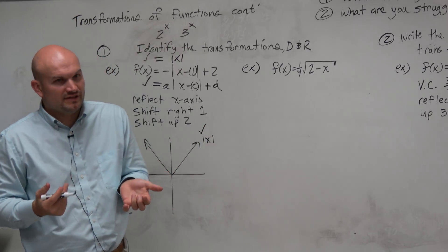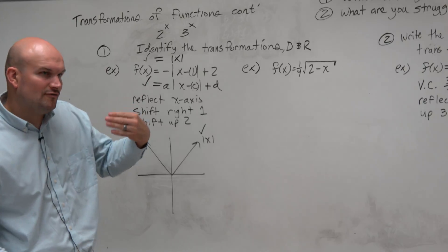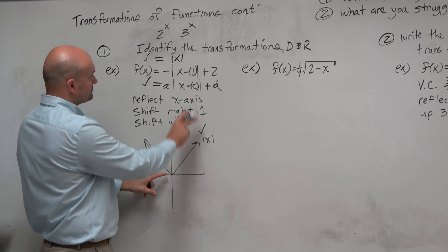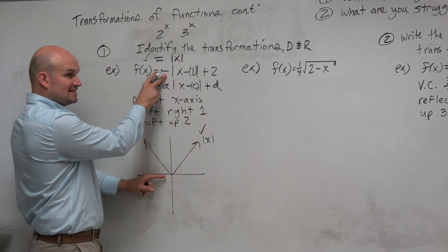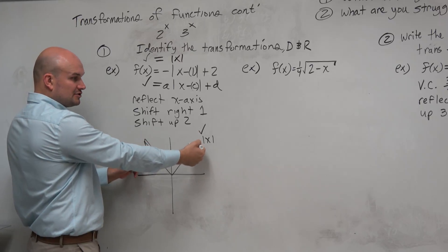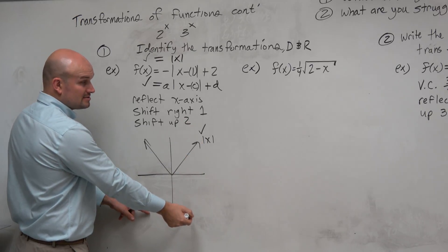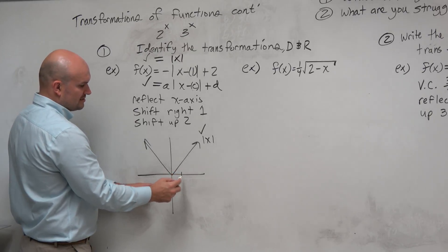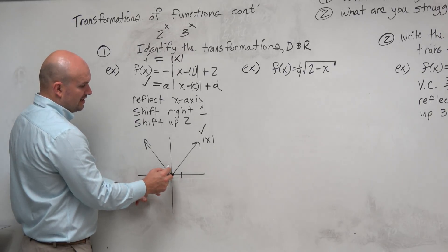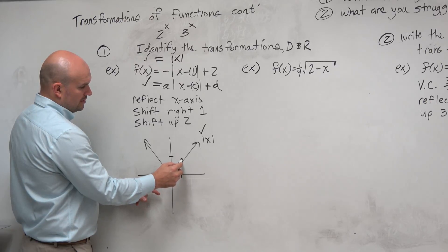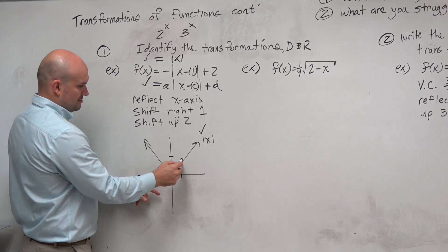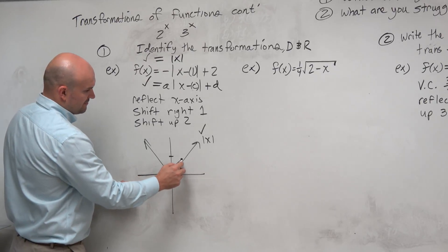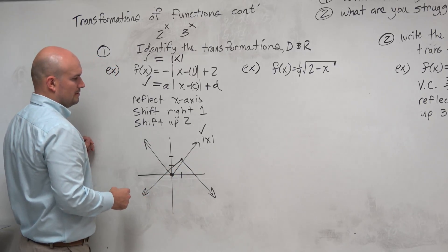Now, I didn't ask you to graph the graph, but I think it's helpful to understand the transformations. This graph is being reflected about the x-axis, so that means I'm taking this graph and flipping it. So now it's facing down. I'm shifting this graph one unit to the right. So you can take this vertex here, shift it one unit to the right, and then up two units. And then now I can just redraw the graph.